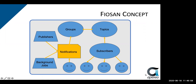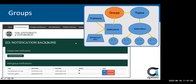When we look conceptually at what makes up FIOSYN, the logic centers around this concept of a notification. Users, publishers, and background jobs can create notifications, and notifications are then associated with a group. On the receiving side, users or entities are subscribers, and subscribers can subscribe to a topic of interest or one they're required to be in — for instance, you may be required to subscribe to emergency alerts for your campus but not for a satellite campus. There's a relationship between groups and topics that ties everything together so notifications reach the right subscribers.